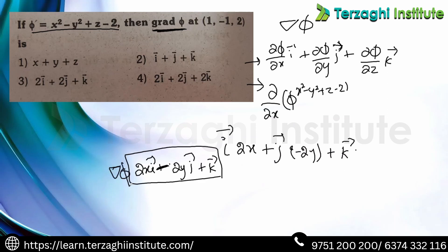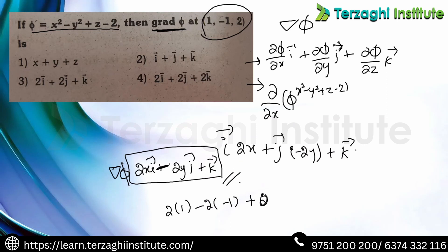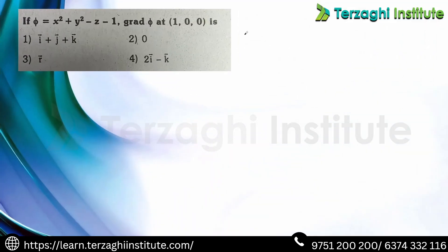Now substitute the point — x = 1, y = −2 (minus 2), z = 1 — into the gradient. We get: 2(1)i + (−2)(−2 wait, substitute gives: 2i + 2j + k... Actually the result substituted gives 2i − 2·(−1)·... the answer for this example is option 3: 2i + 2j + k.